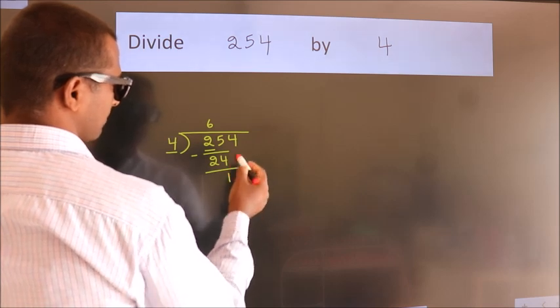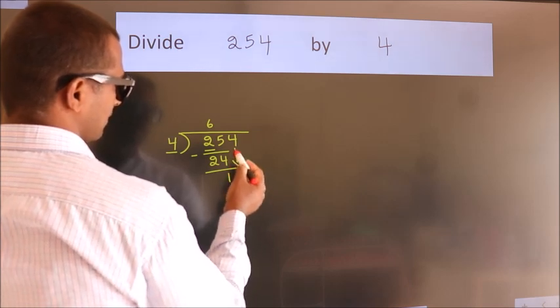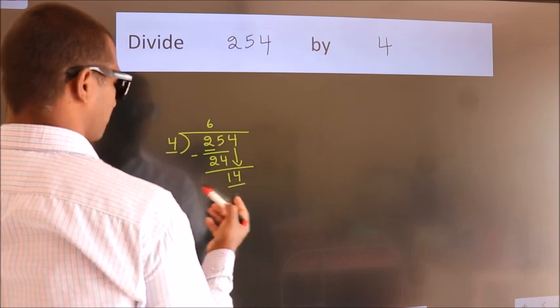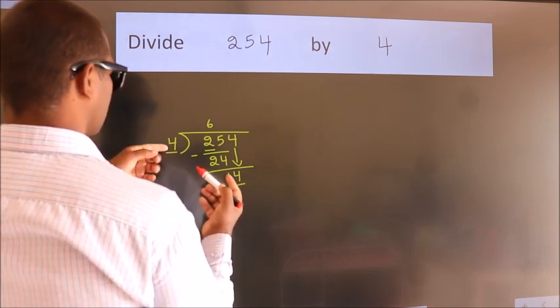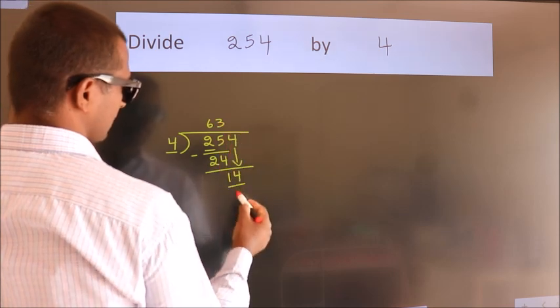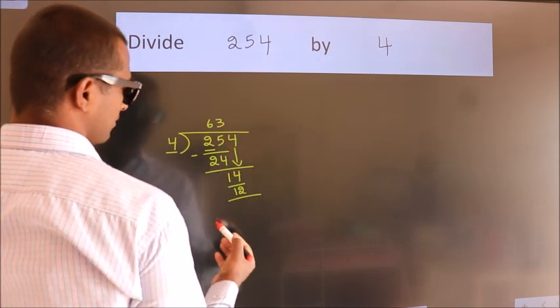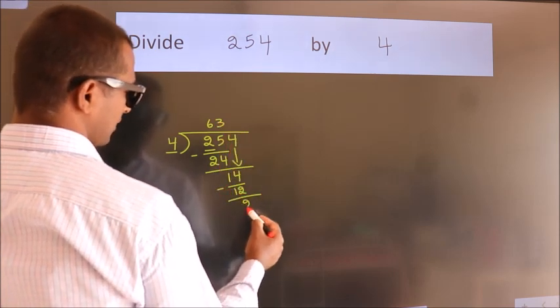After this bring down the beside number. So 4 down, so 14. A number close to 14 in the 4 table is 4×3=12. Now we subtract. We get 2.